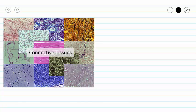This video will conclude our series on connective tissues. We're covering our last connective tissue type, which is blood. So before we get into the details of blood, let's review the unifying characteristics of connective tissues one more time.